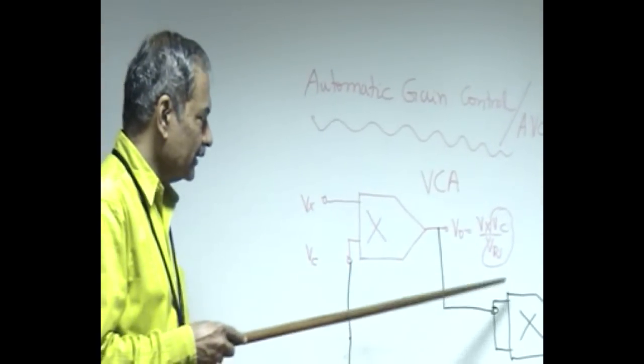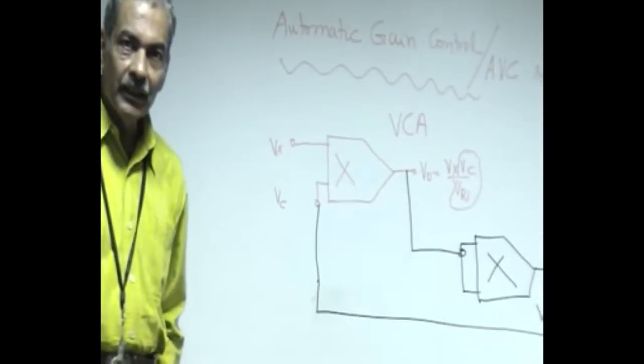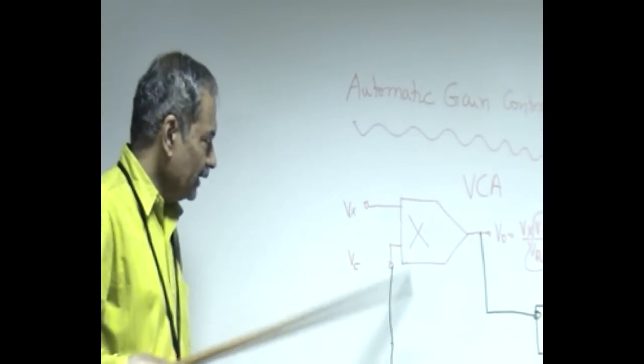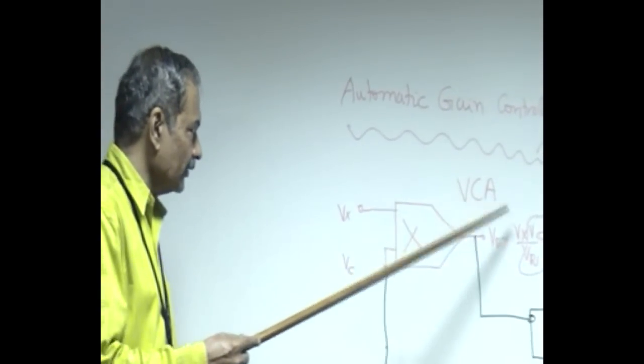Such a multiplier is what is being used to demonstrate this control loop. This first multiplier is being used as a voltage control amplifier.